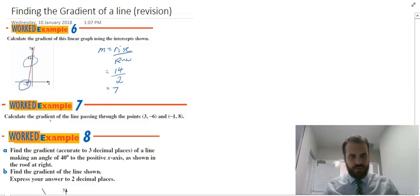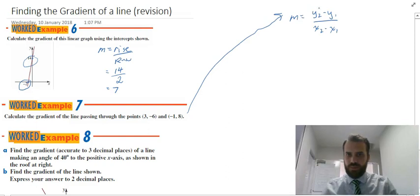Next one. Calculate the gradient of the line passing through the points (3, -6) and (-1, 8). You'll remember your formula: m equals y₂ minus y₁ over x₂ minus x₁.